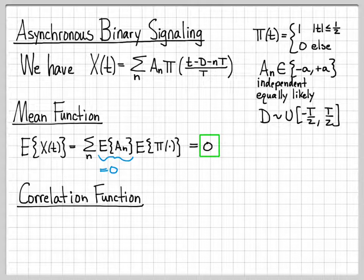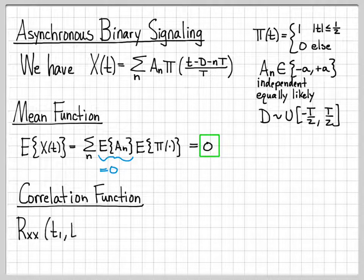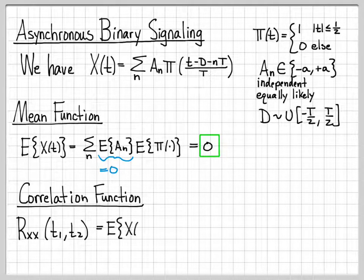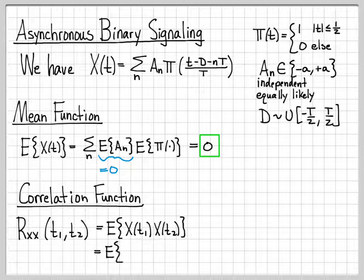Let's go ahead and compute the correlation function for the asynchronous binary signaling random process. We need to compute rxx of t1, t2, which by definition is the expected value of x at time t1 times x at time t2, which I can write like this.